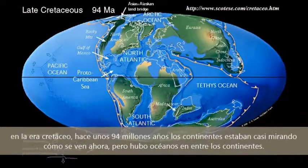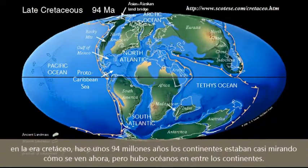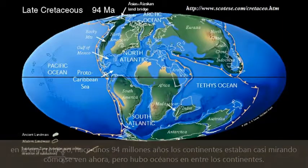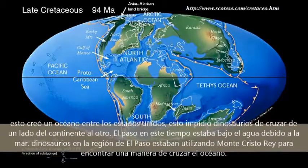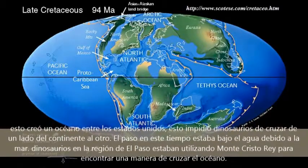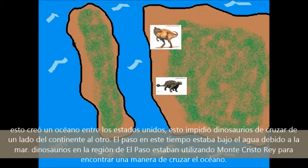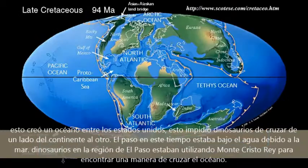In the Cretaceous age, about 94 million years ago, the continents were almost looking how they look now, but there were oceans in between continents. This created an ocean between the United States, which prevented dinosaurs from crossing from one side of the continent to the other. This also meant dinosaurs from one side of the continent looked different from the other side. El Paso at this time was underwater due to the ocean.